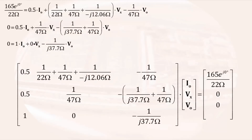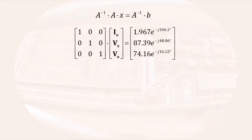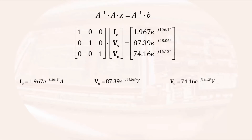Note that all I have done at this point is to pull off the coefficients from each of the variables without doing any further mathematical manipulation of them. The system of equations is in the form of a 3x3 matrix times a column vector being equal to a column vector. If we take the inverse of the 3x3 matrix and apply it to both sides, the result is the unity matrix times our unknowns equal to a column vector of our solutions. So the current Io is equal to 1.987 e to the minus j 106.1 degrees amps, Vx is equal to 87.39 e to the minus j 48.06 degrees volts, and Vo is equal to 74.16 e to the minus j 16.12 degrees volts.